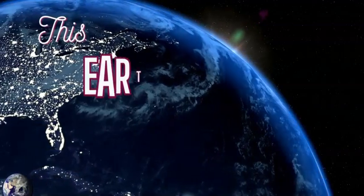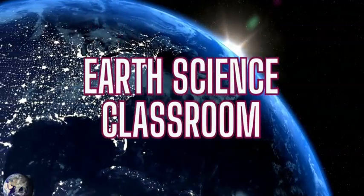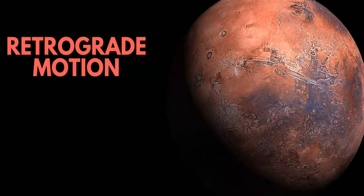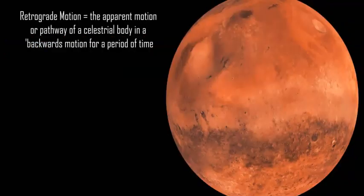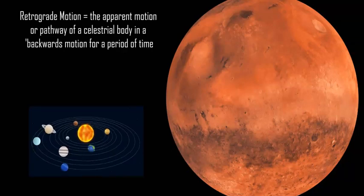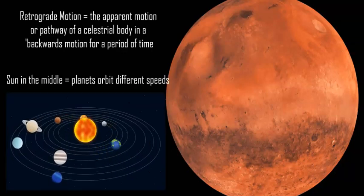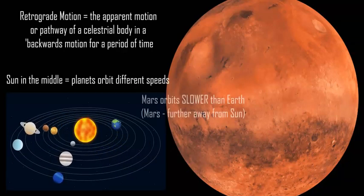This is the Earth Science Classroom. One of the natural phenomena that the ancient Greeks observed was how planets move across the night sky over time, known as retrograde motion.